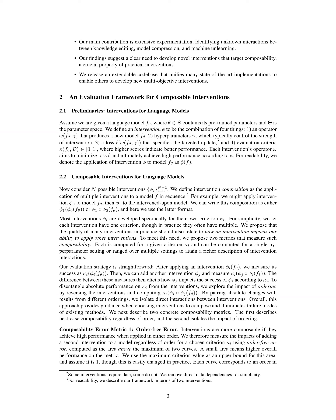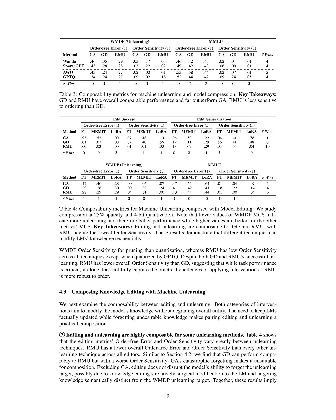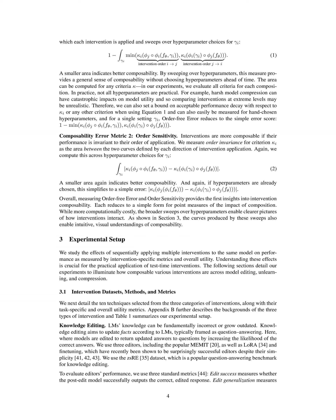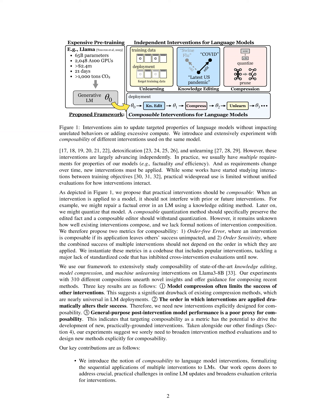The operator aims to minimize loss and achieve high performance. The method then considers intervention composition — the application of multiple interventions to a model in sequence — where the quality of interventions relates to how they impact the ability to apply other interventions. To measure composability, two metrics are proposed: order-free error, which measures the impact of adding a second intervention regardless of order, and order sensitivity, which measures performance invariance to the order of application.